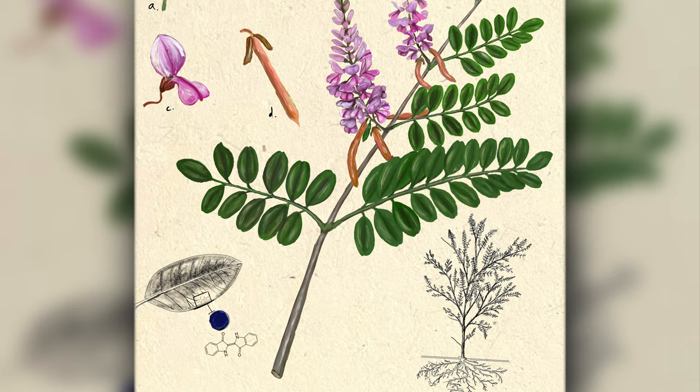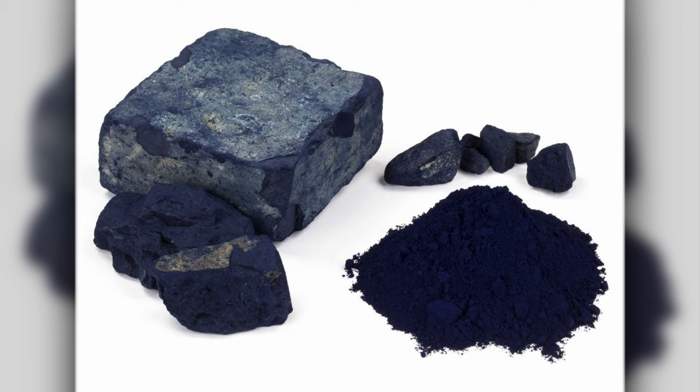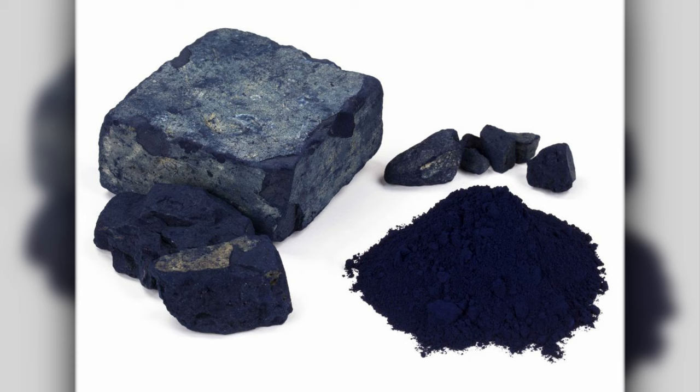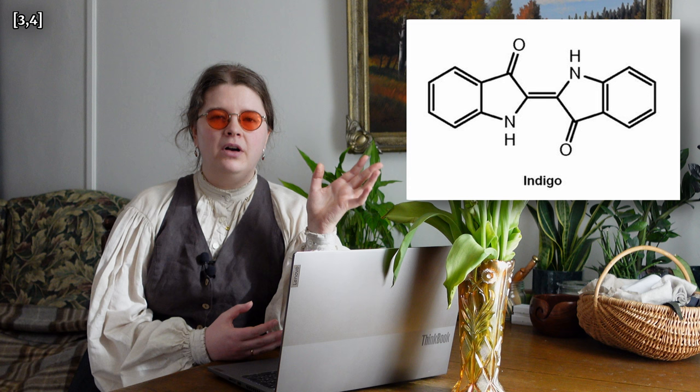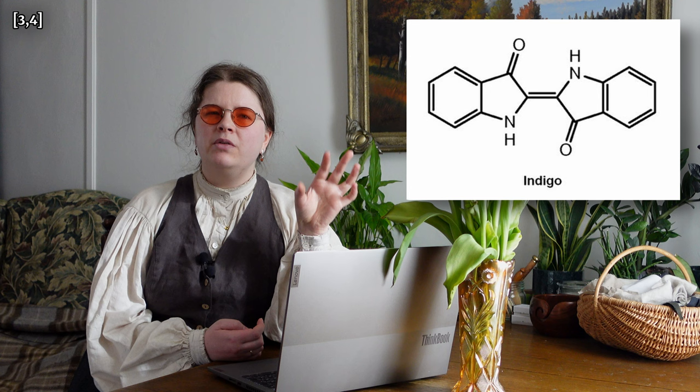Indigo is an excellent example of a direct dye, because rather than use a mordant to help us, we manipulate the chemical structure to get what we want. This is the molecular structure of indigo. You do need to ferment your indigo-containing plant to get to this molecule, but we have enough chemistry to go through in this episode, so I think we're going to start here.